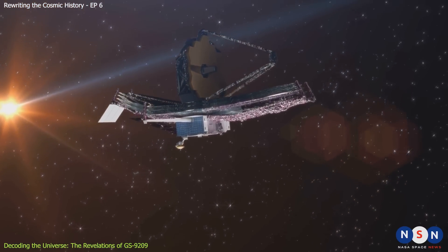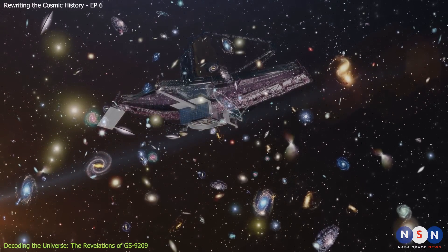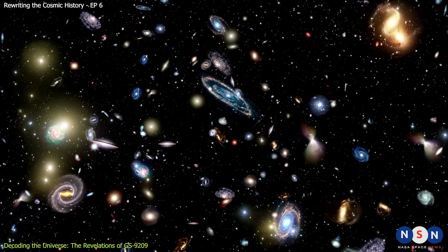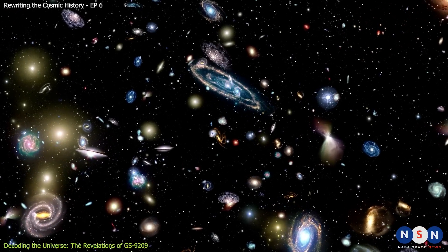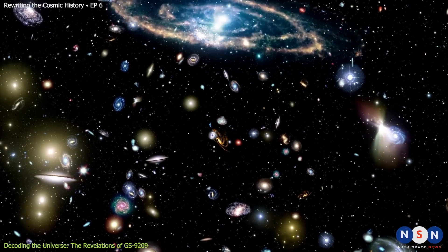James Webb is not only observing GS 9209, but also many other galaxies in the same patch of sky. This patch of sky is called the Cosmic Evolution Early Release Science, or SEERS, survey, and it covers an area close to the Big Dipper constellation.